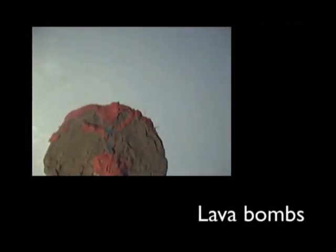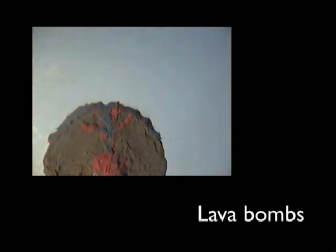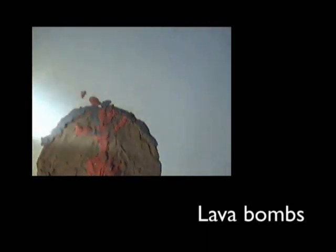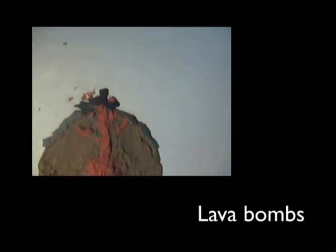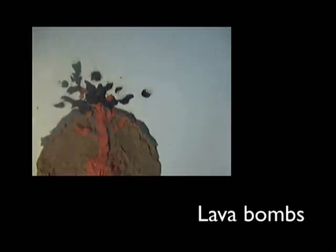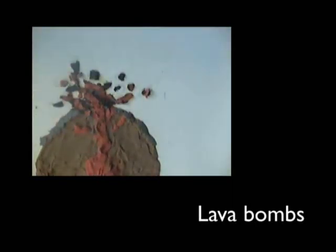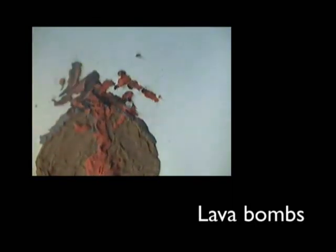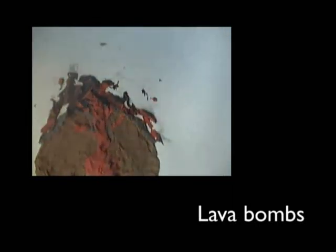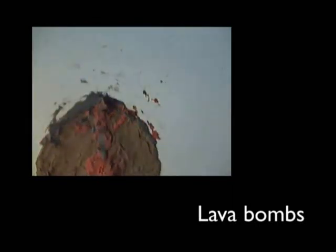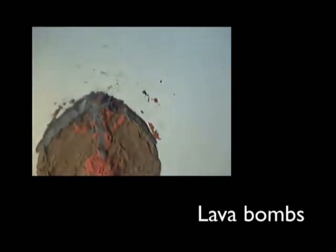When a composite volcano erupts, lava bombs are projected into the air. These lava bombs are made of solid pieces of magma which are hardened in the vent of the volcano but are shattered when the volcano erupts.